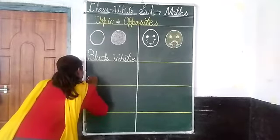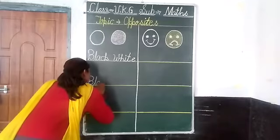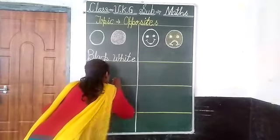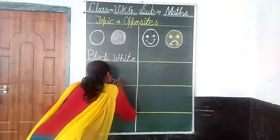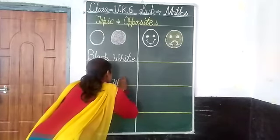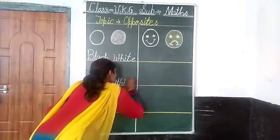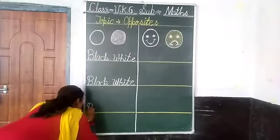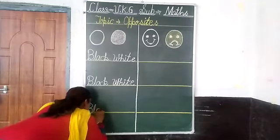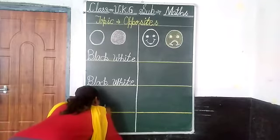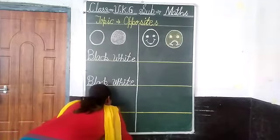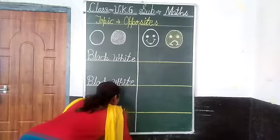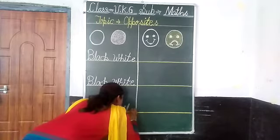Again write. B-L-A-C-K, black. Black means kala. W-H-I-T-E, white. Again write: B-L-A-C-K, black. W-H-I-T-E, white.